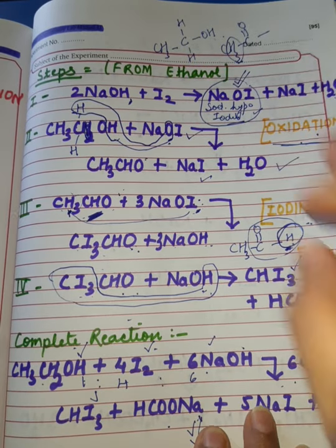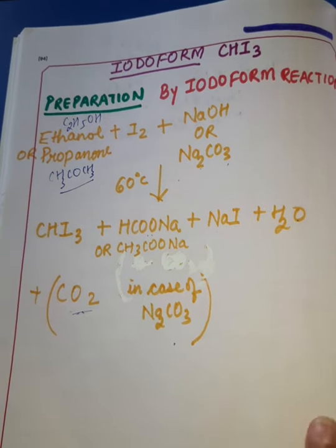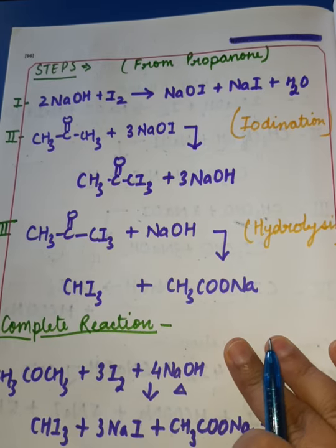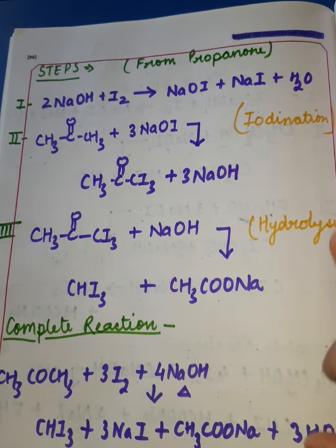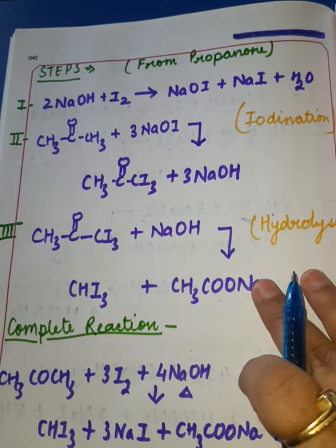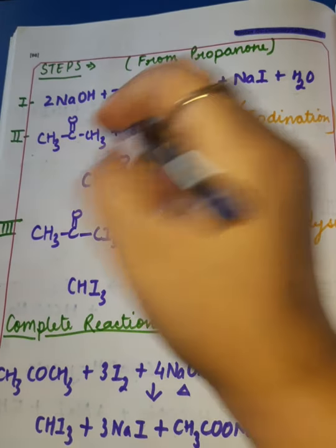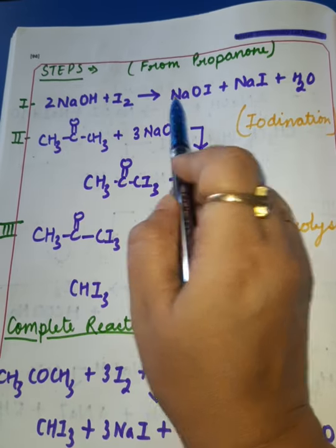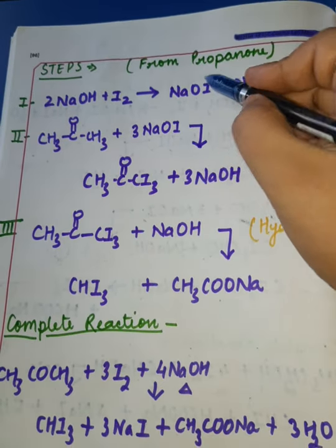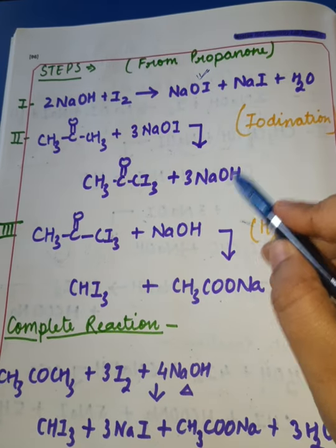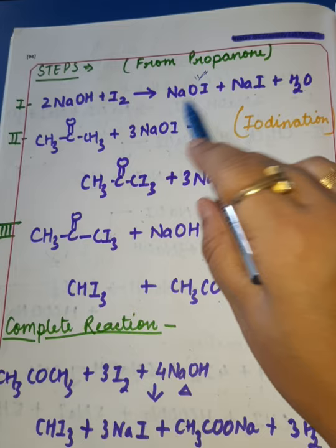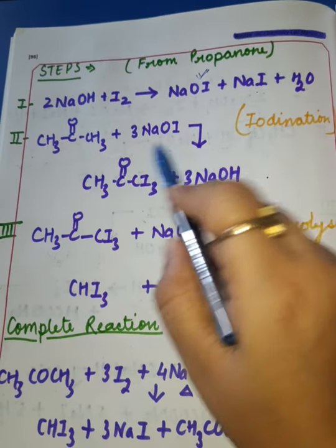Now let's look at Iodoform reaction with propanone (acetone). Since acetone already directly contains the methyl keto group, there is no oxidation step. So Step 1 is the same: NaOH reacts with iodine to form NaOI plus NaI plus H2O. NaOI is the very important compound that will be heavily used in the iodination step.